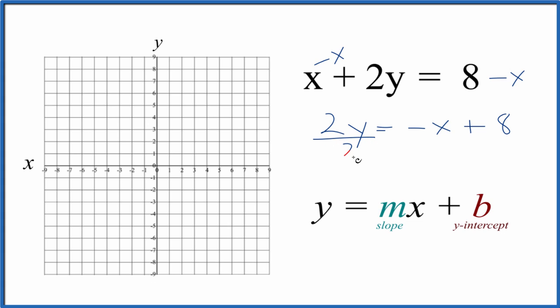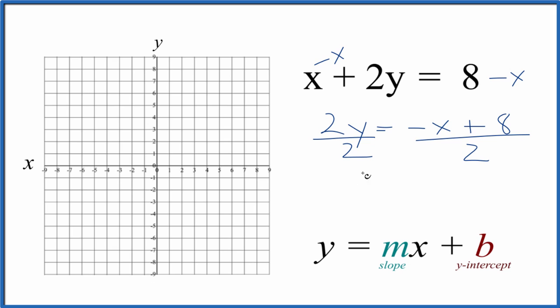Then we need to divide both sides by 2. So 2 over 2 is 1, so we have 1y, which is just y, and then we're going to write negative x over 2 plus 8 over 2, and 8 divided by 2 is just 4.